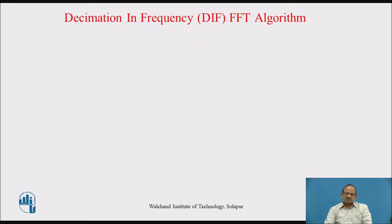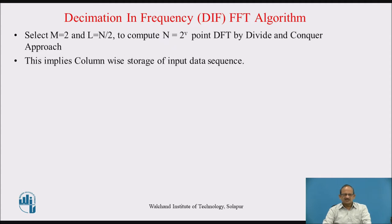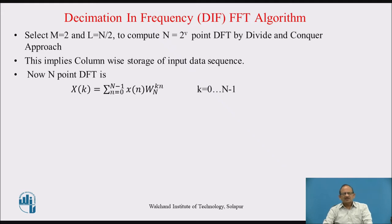We have seen a divide and conquer approach for computation of N-point DFT in terms of smaller size DFTs. Here we will make use of that divide and conquer approach. Let us assume M equal to 2 and L equal to N by 2 to compute N-point DFT. This implies column-wise storage of input data sequence because there are two columns, so 50% of the input sequence will be stored in the first column and 50% in the second column. The N-point DFT is represented as X(k) equal to summation n=0 to N-1 of x(n) W_N^(kn), where W_N is the twiddle factor represented as e raised to minus j 2 pi by N.